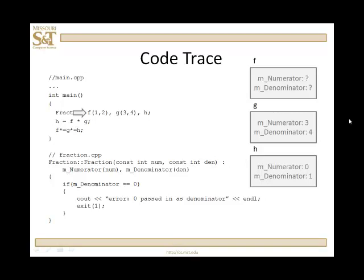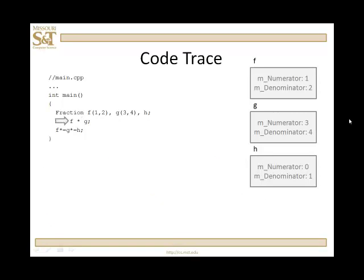Then we're going to construct f. We're going to pass one and two to numerator and denominator for the constructor that takes two integers. Numerator is set to one, denominator to two, we check to make sure the denominator is not zero, and f is constructed.